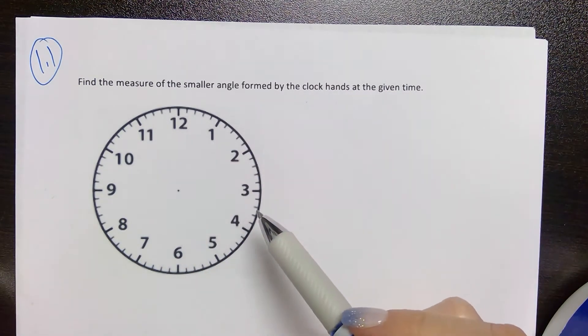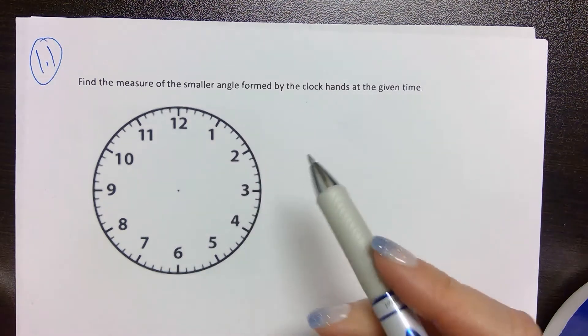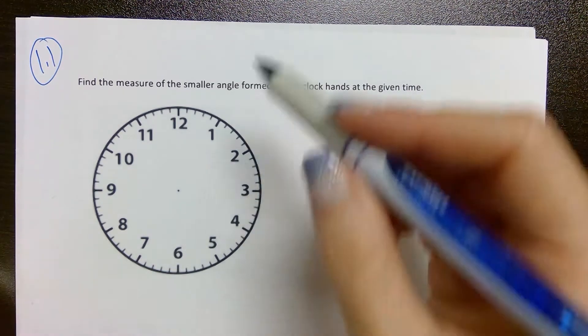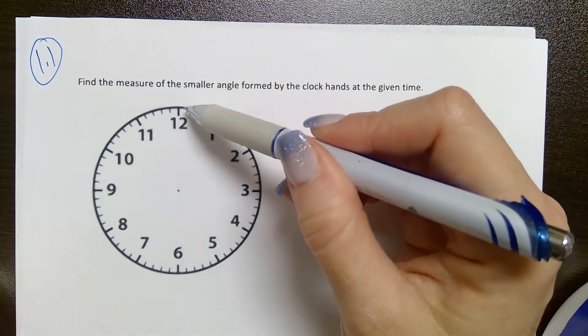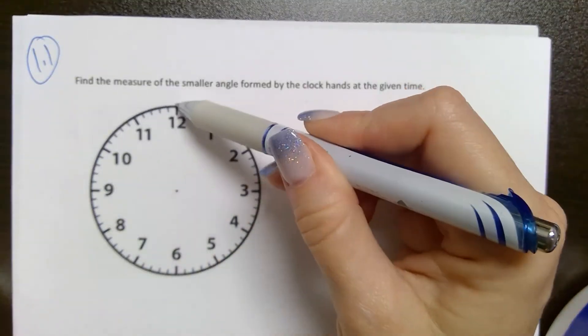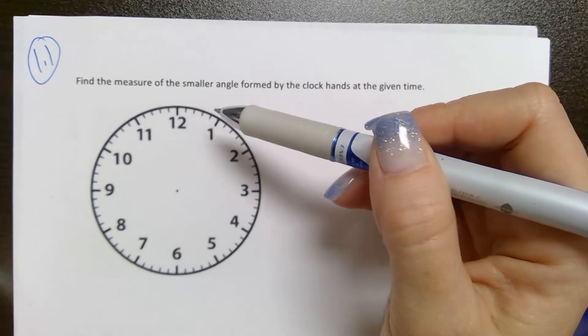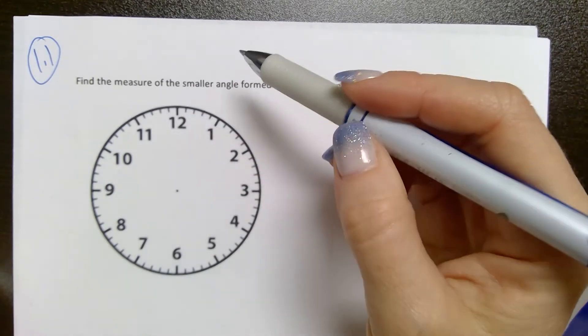Now, there's a couple of things going on in this problem that you have to consider in order to answer it correctly. First of all, if I make one full rotation around the clock face, that's 360 degrees, just like a full rotation anywhere.